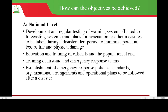How can we achieve these objectives? At national level, this can be done by developing and regularly testing warning systems linked to forecasting systems, and planning for evacuation or other measures during a disaster alert period in order to minimize potential loss of life and physical damage. This includes education and training of officials and the population at risk, training of first aid and emergency response teams, and establishment of emergency response policies, standards, organizational arrangements and operational plans.